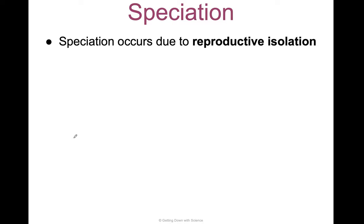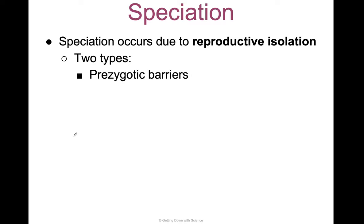Speciation occurs due to reproductive isolation. There are two types of reproductive isolation — a reason why one member of a species cannot mate and have fertile offspring with another member of that species. There's two types: prezygotic barriers and postzygotic barriers.